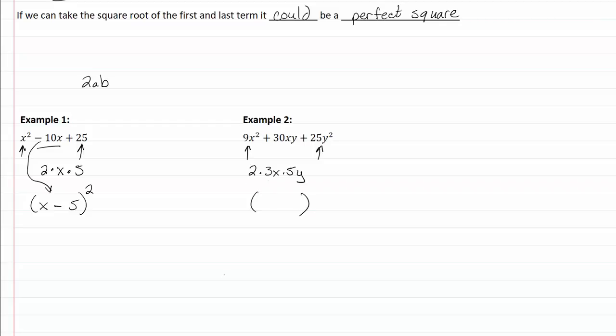So again I can just put my parentheses, square root of the first term is three x, square root of the last term is five y, and my middle term is a plus, so I just bring that down here, put that there, raise the whole thing to a second power and it is factored.